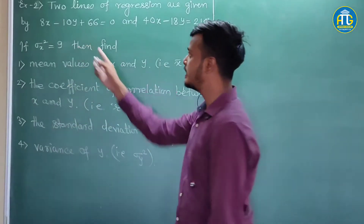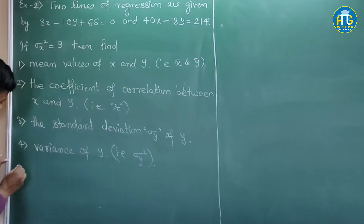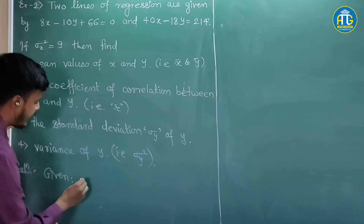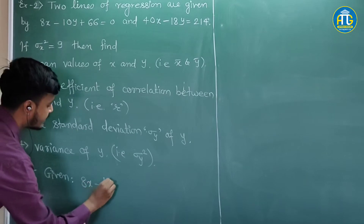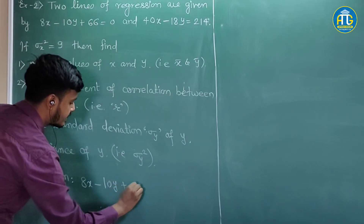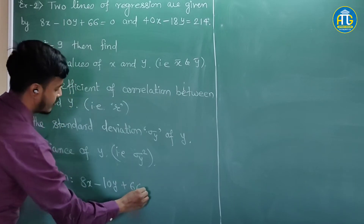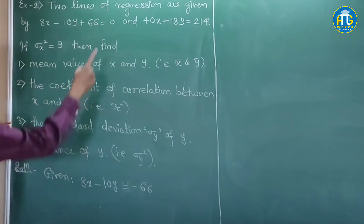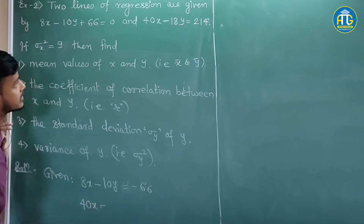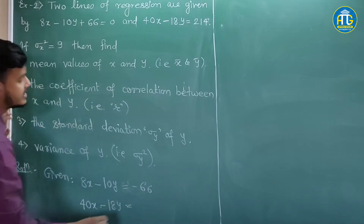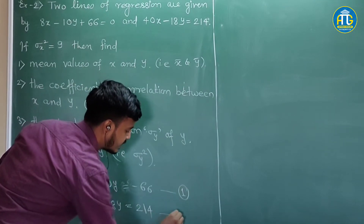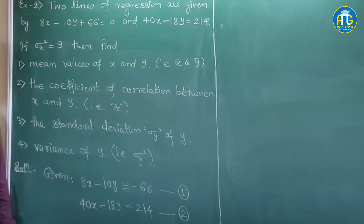Let us start with the given information. The two equations are: equation 1 is 8x minus 10y plus 66 equals 0, which we write as 8x minus 10y equals minus 66, and equation 2 is 40x minus 18y equals 214. We have just copied down these two equations from the question.